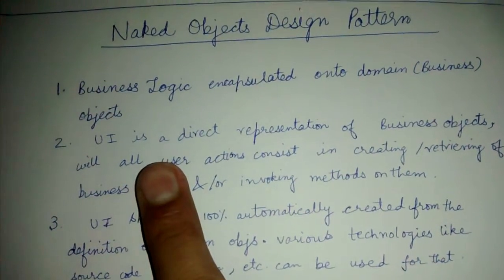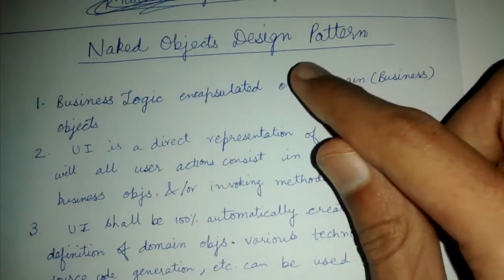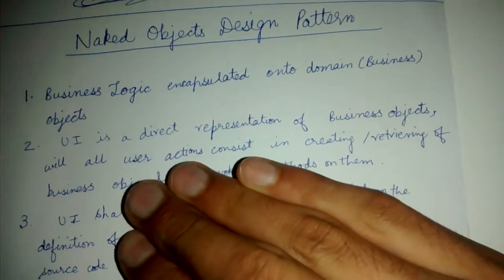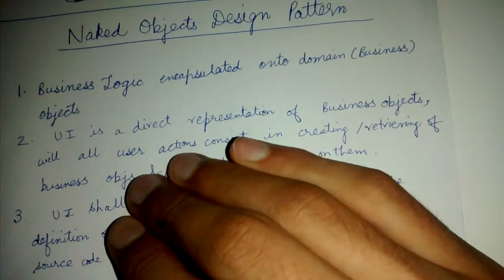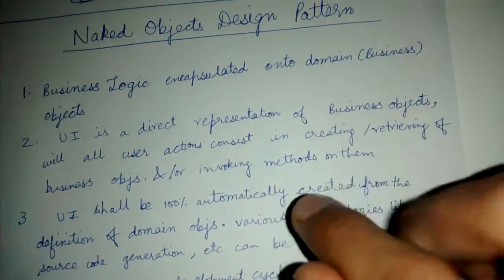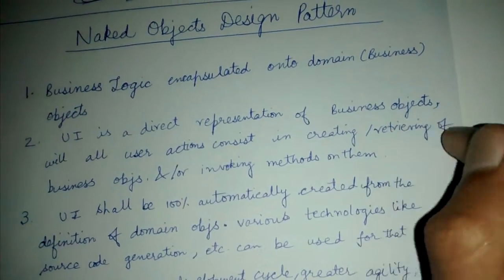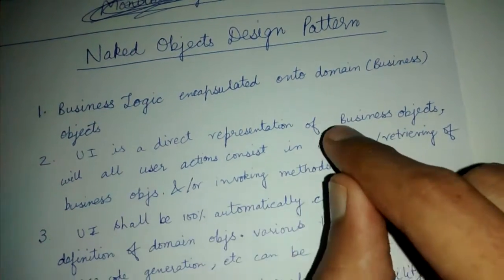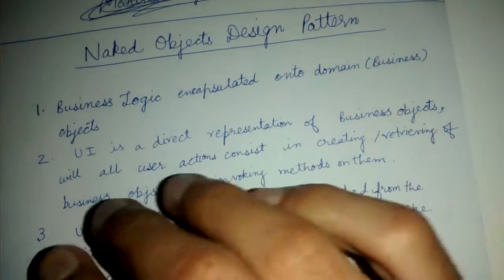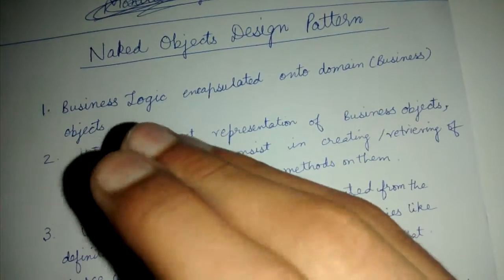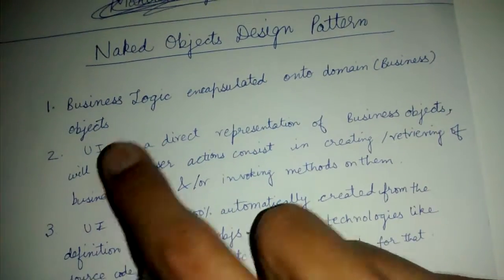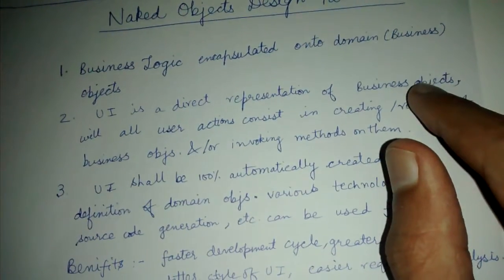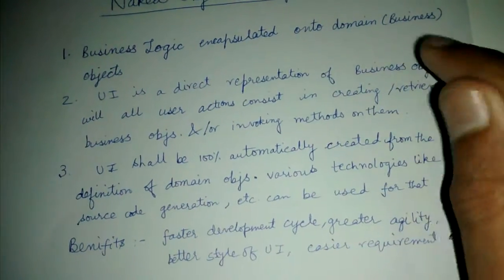The second principle is that the UI is a direct representation of these business objects. All user actions consist of either creating or retrieving these business objects, or invoking methods on them. The UI will directly call methods on these business objects and display whatever it gets back as a reply, so user actions directly affect the business objects.